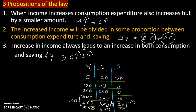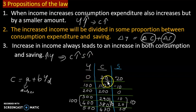The consumption function equation is C equals a plus b times Yd. Here, 'a' is autonomous consumption — the level of consumption that occurs even when income is zero. Even when income is zero, people will survive, meaning there is still a level of consumption.